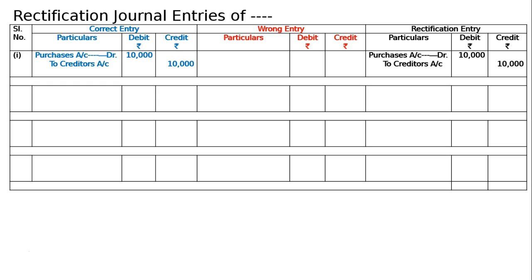The rectification entry is purchases account debited to creditors account. Though it is not stated, it was a credit purchase. Alternatively, write purchases account debited to cash account. Being the rectification entry was not passed anywhere, we pass it now. The narration will be: purchases not recorded, now recorded and rectified.